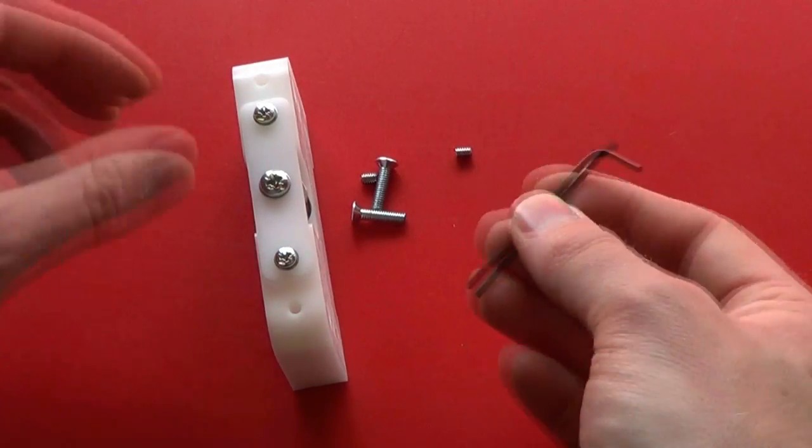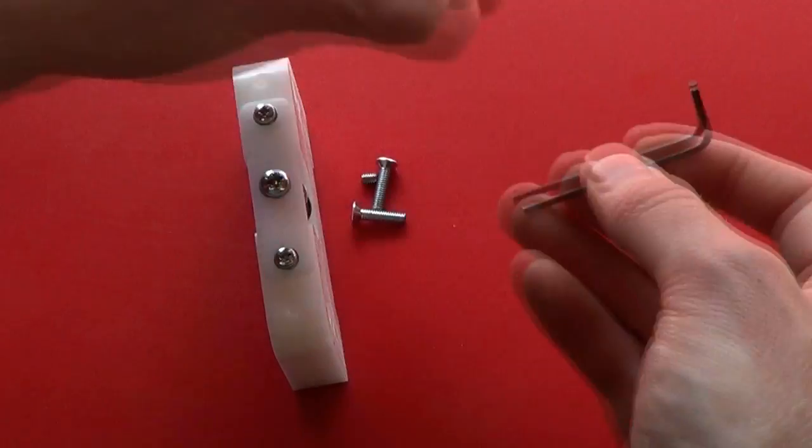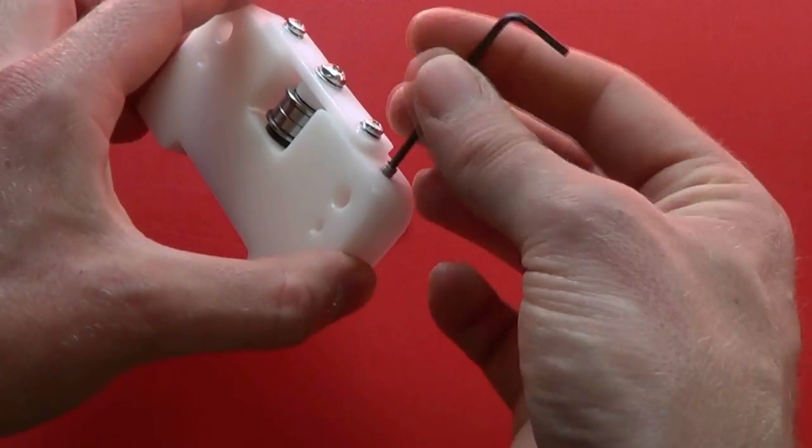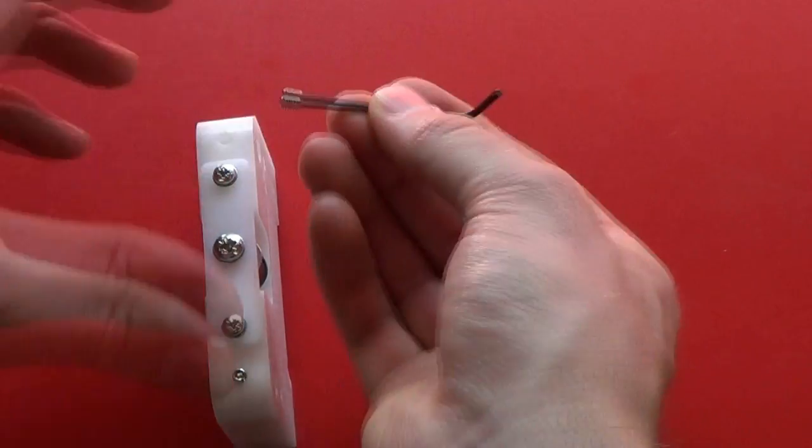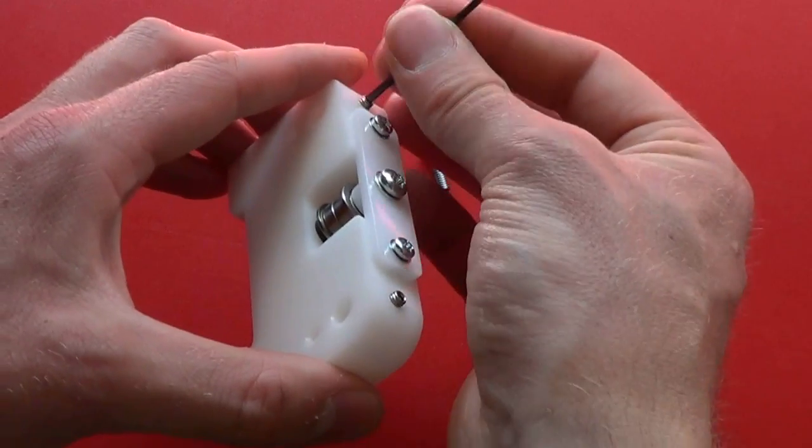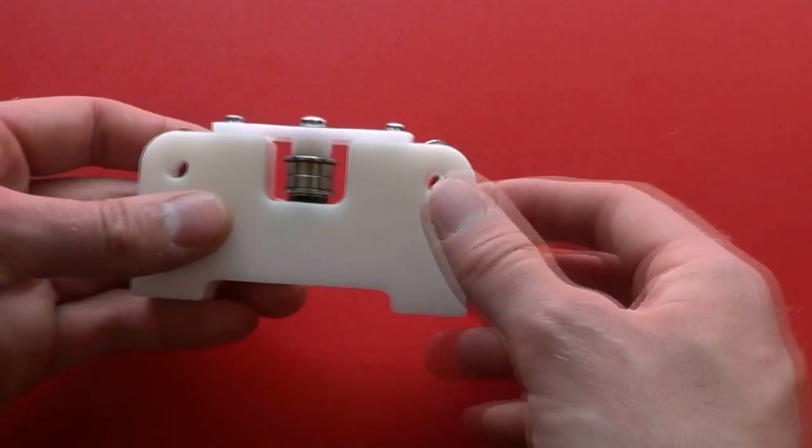With the 2mm Allen key, insert the two grub screws part way again. Just like on the other end, these will be used to clamp the X support rails once the whole unit is assembled.